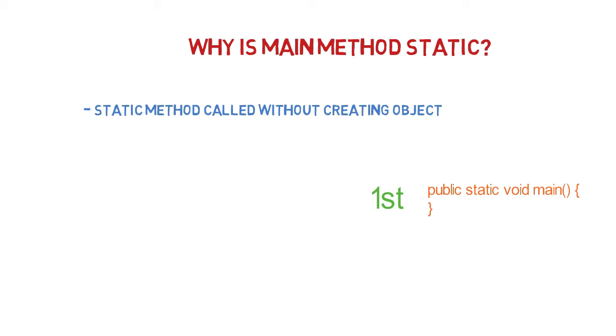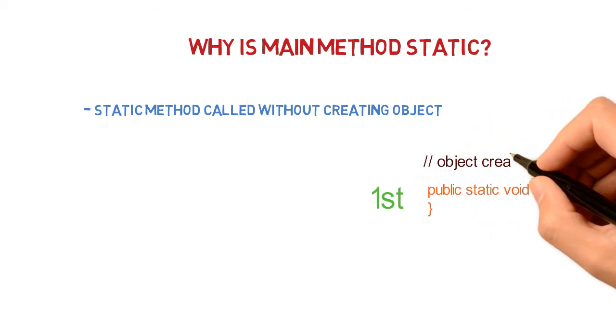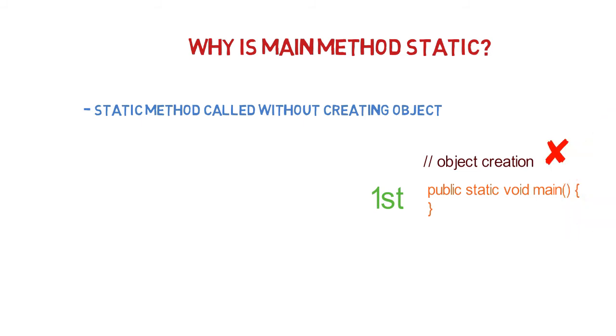When we have the compiler, compiler first looks for the main method, so we cannot have anything before the main method. That is, we cannot allow to create the object before the main method. So basically we cannot call main method through object because that has to be the first line of execution, right? And to not allow main method by creating object, we make it static because once we make it static we do not need to create object and JVM can directly call the main method.